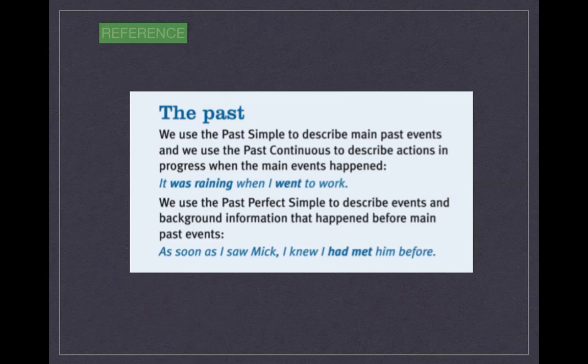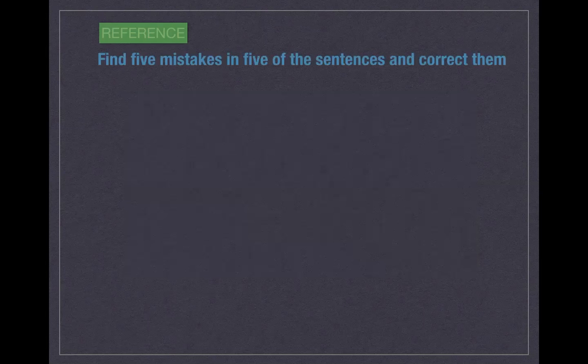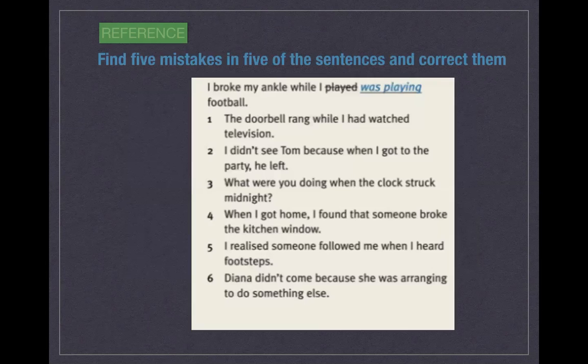We use the past perfect simple to describe events and background information that happened before the main events. For example: 'As soon as I saw Mick, I realised I had met him before' — meaning he had met him before the moment he saw Mick. Now find five mistakes in five of the sentences and correct them. Stop the video and do the exercise.